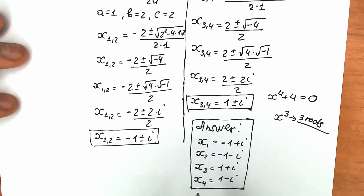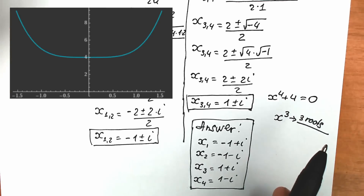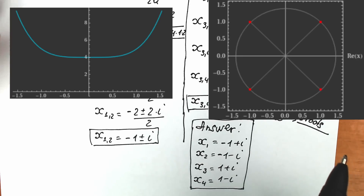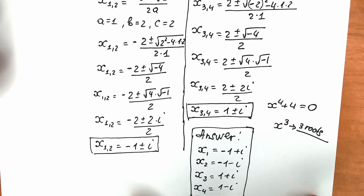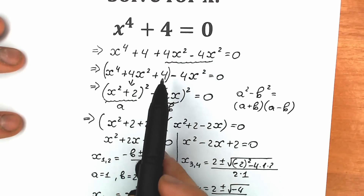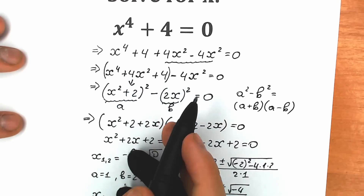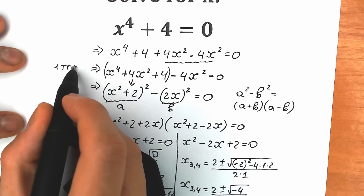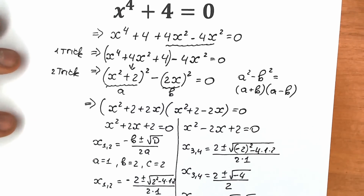It happens that all four roots are complex. There are questions with five complex roots where none are real — it happens sometimes. I'm going to show you a graph for this question on the complex plane; you can see screenshots from internet libraries confirming we solved it correctly. The key tricks were: first, adding and subtracting 4x² to form a perfect square; second, applying the difference of squares identity.